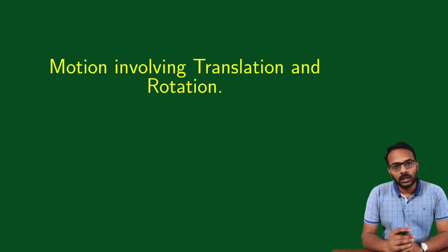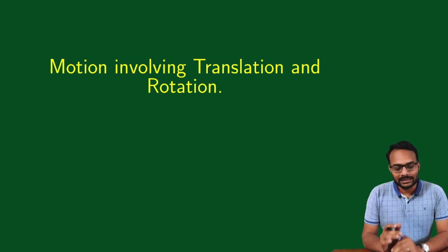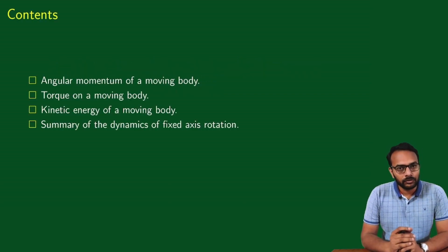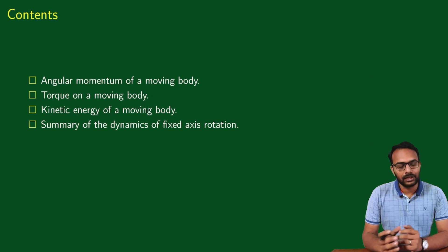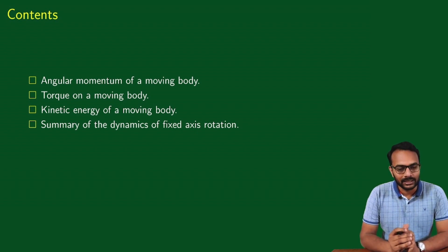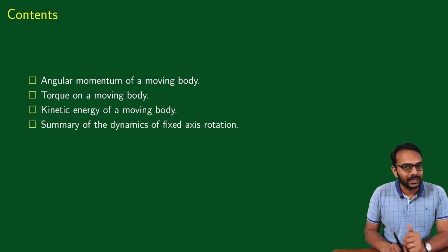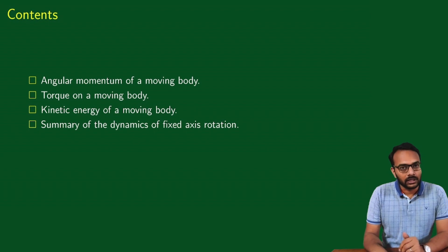Let's continue our discussion on motion involving translation and rotation. Angular momentum of a moving body was already discussed — fixed axis rotation, rotation and translation angular momentum. Today we will do the same thing for torque and kinetic energy, and then we will summarize all these things before concluding.